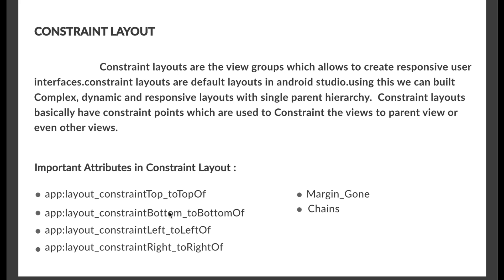The first attribute is layout_constraintTop_toTopOf. As the name says, this attribute is used for the top constraint point — it connects a view's top to either the parent or other views in the layout. The second is layout_constraintBottom_toBottomOf, used to connect the bottom constraint point. Similarly, the left attribute connects the left constraint and the right attribute connects the right constraint.